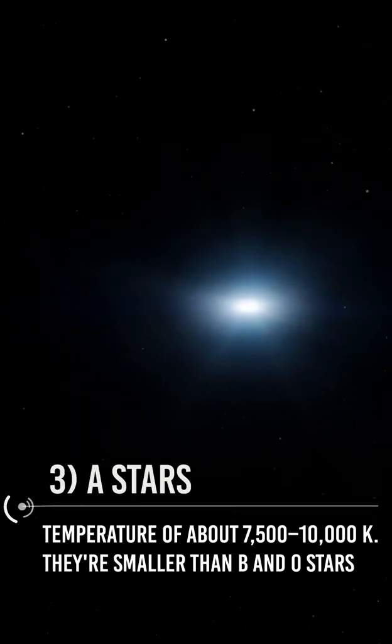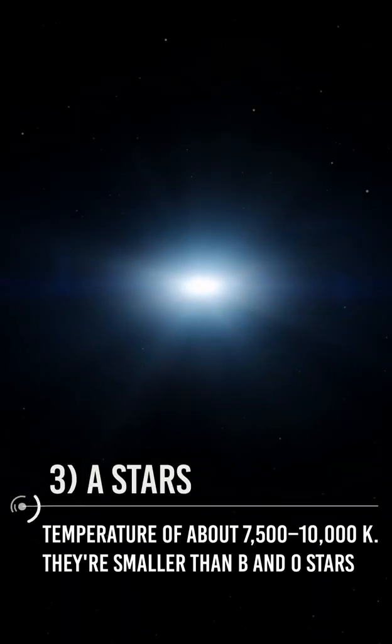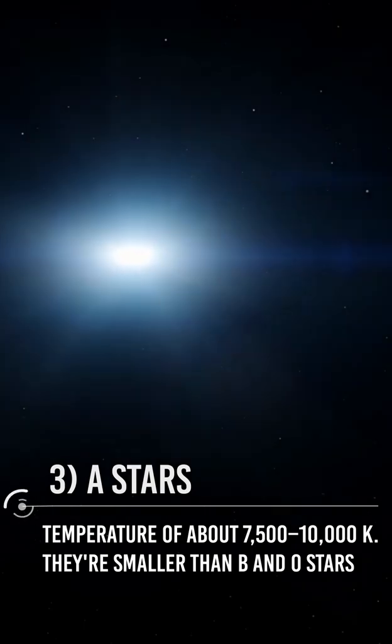A-stars. Temperature of about 7,500 to 10,000 Kelvin. They're smaller than B and O-stars.